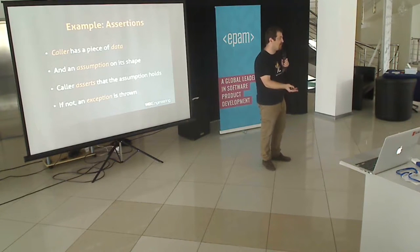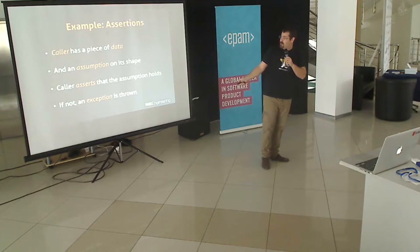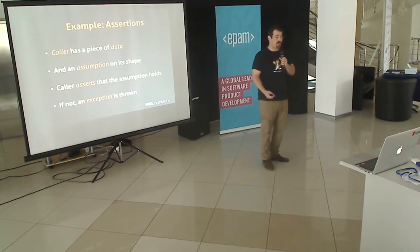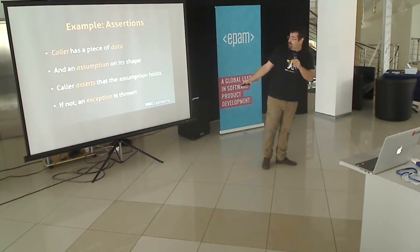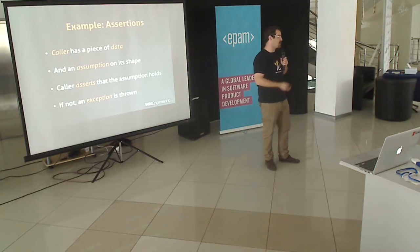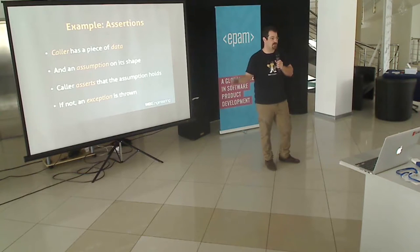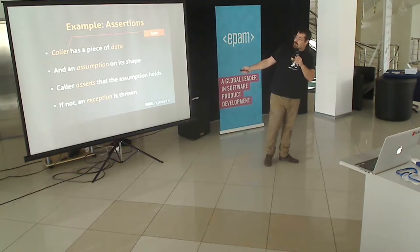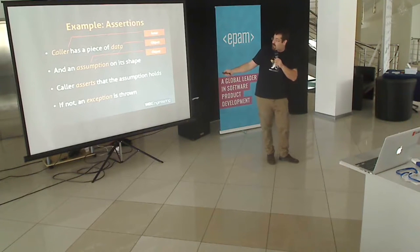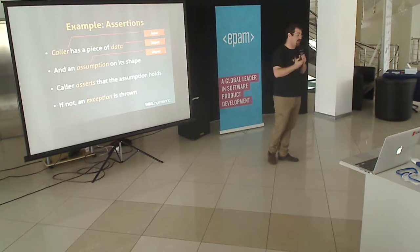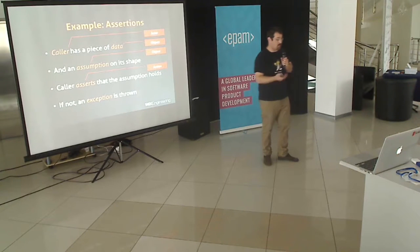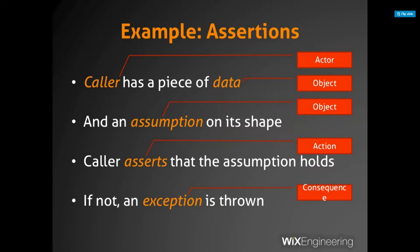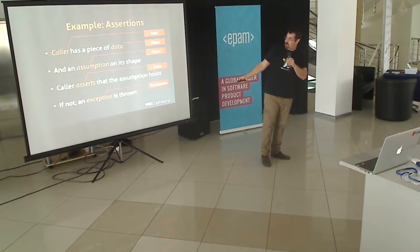The objects you have in place are basically an assertion. If I'm trying to validate that a list is not empty, the list is an object, and the assumption that the list is not empty is also an object. The consequence I want for this example is an assertion exception to be thrown if that assumption does not hold. Data and assumptions are objects, so we need to provide a language in which it's easy to define these assumptions.